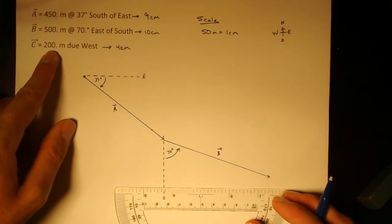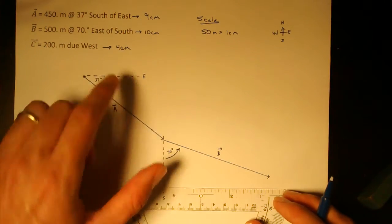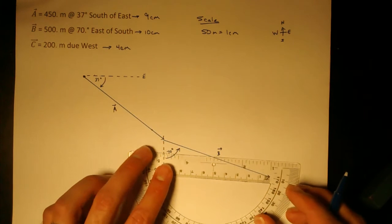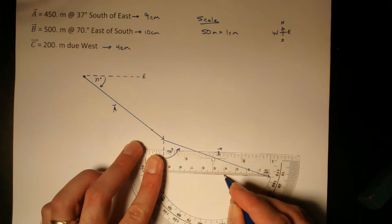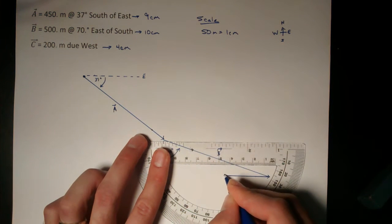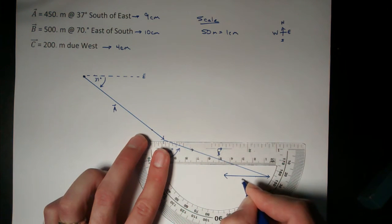Vector C, 200 meters, which is represented by 4 centimeters, directly west. So here, just point the protractor to the left and draw a vector 4 centimeters. There's vector C.